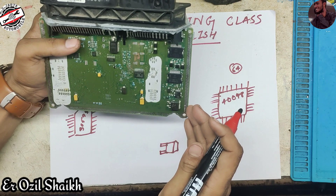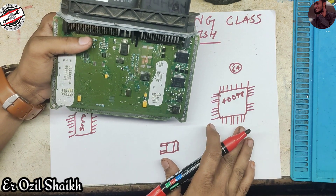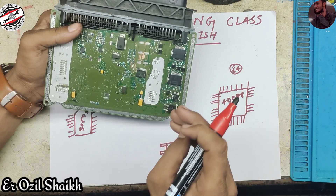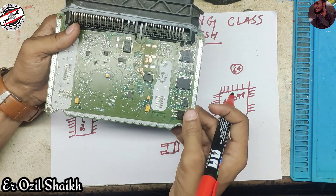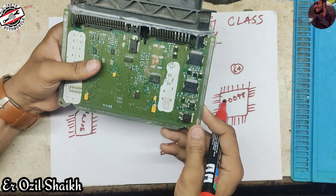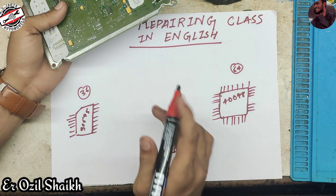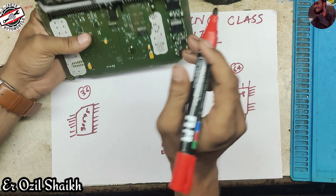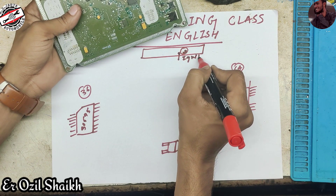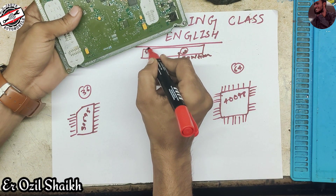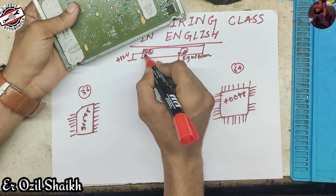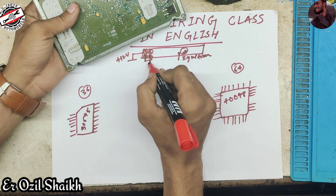In electronics there are no limits — you can name a component according to its working. The name depends on how it works and what the working of the IC, transistor, or MOSFET is. Many transistors are used to make one IC. Now I'm going to draw the ECM connector. Here pin number 18 is our ignition.